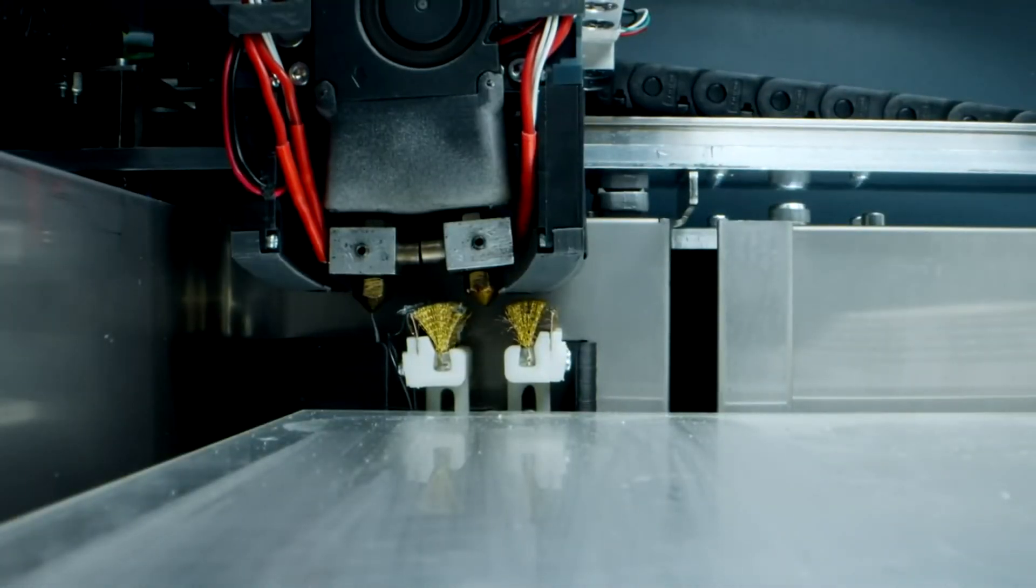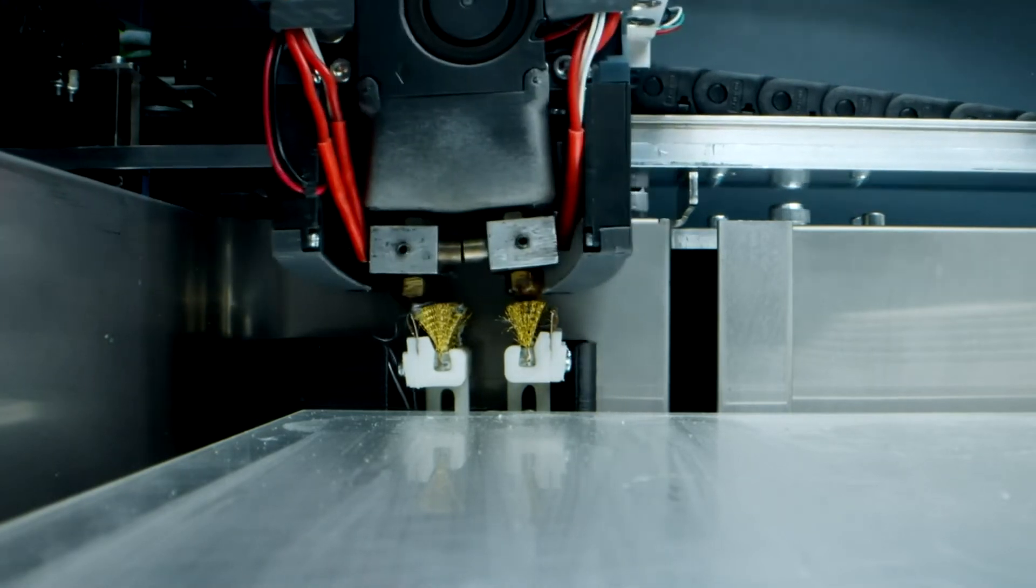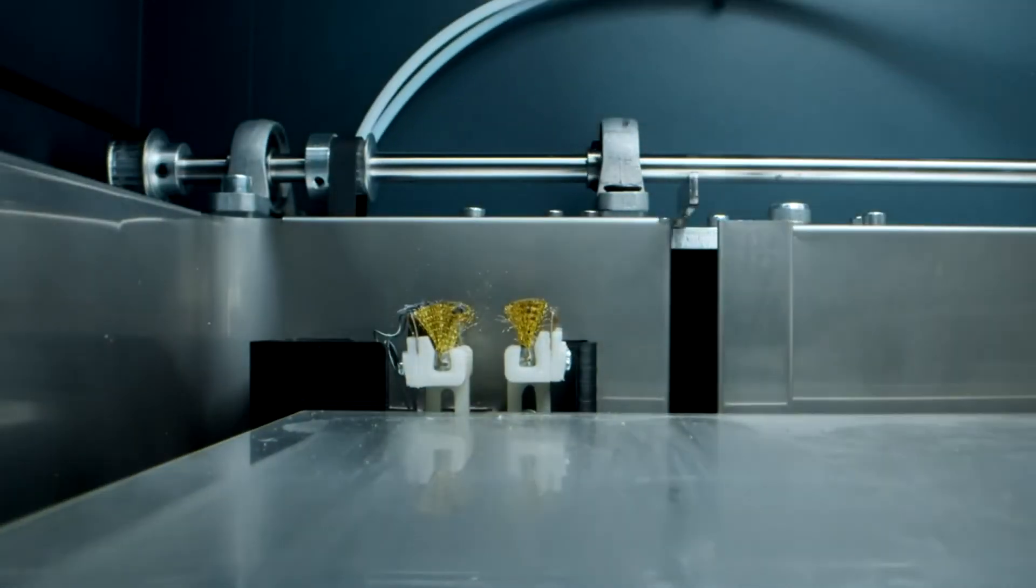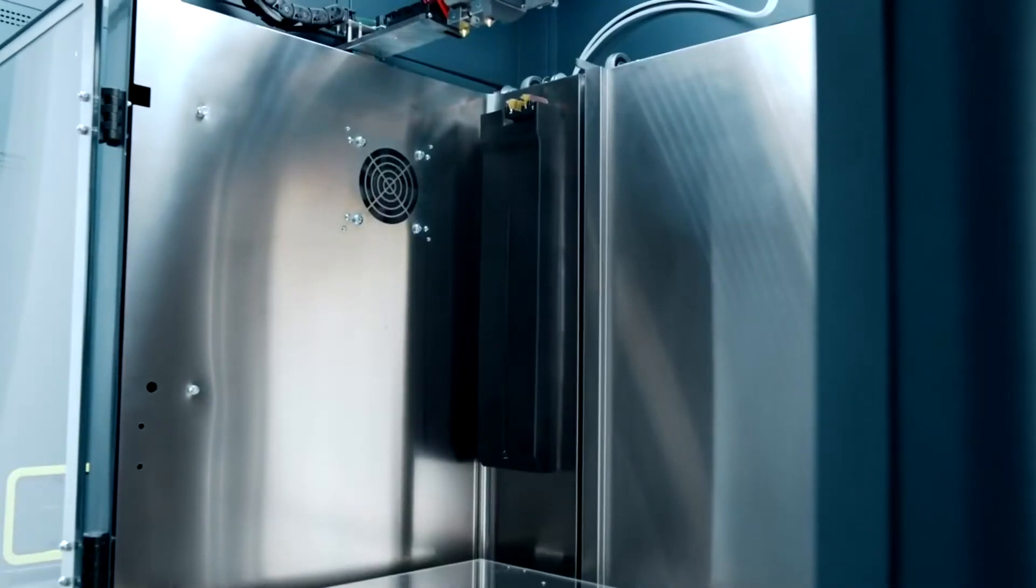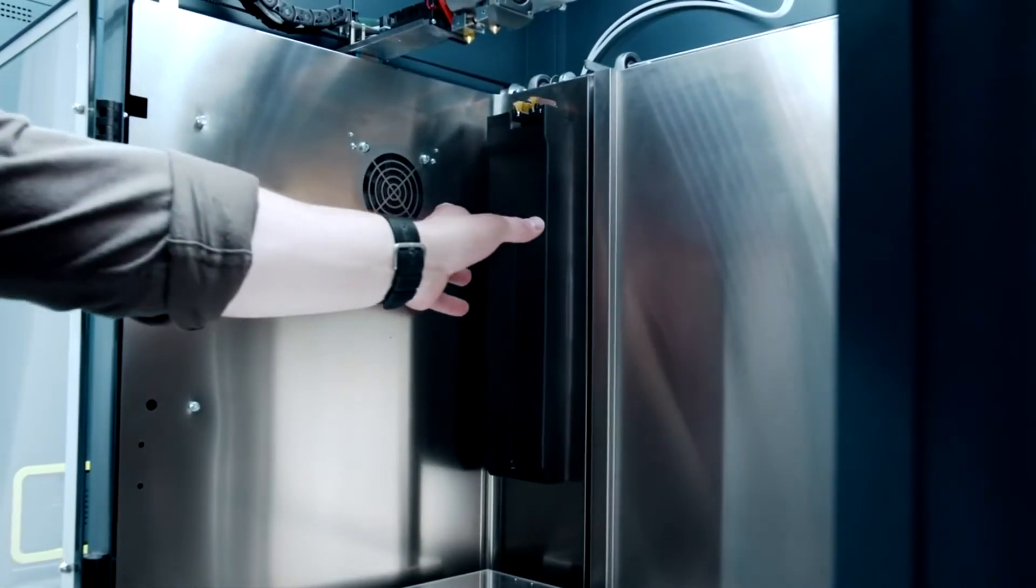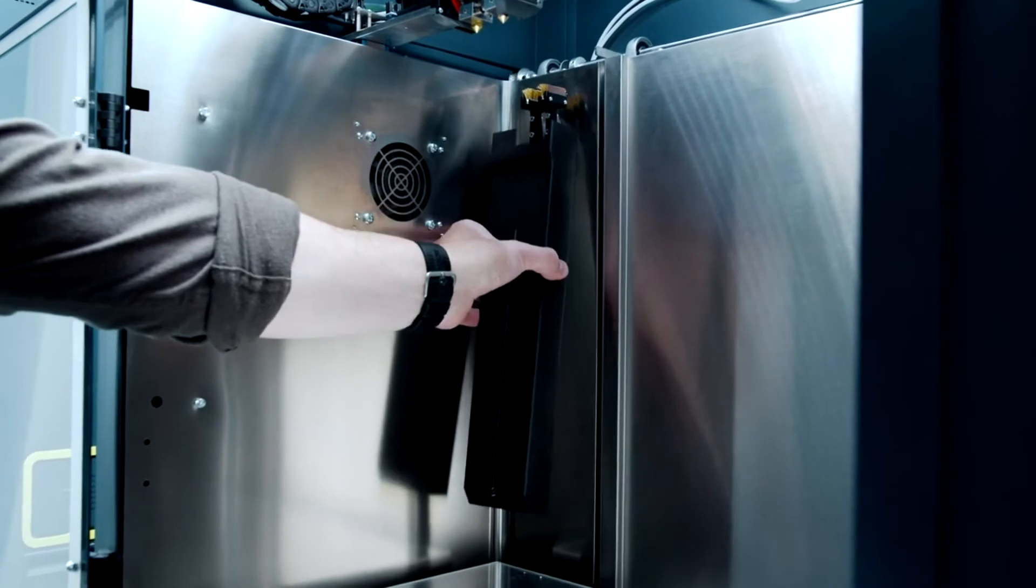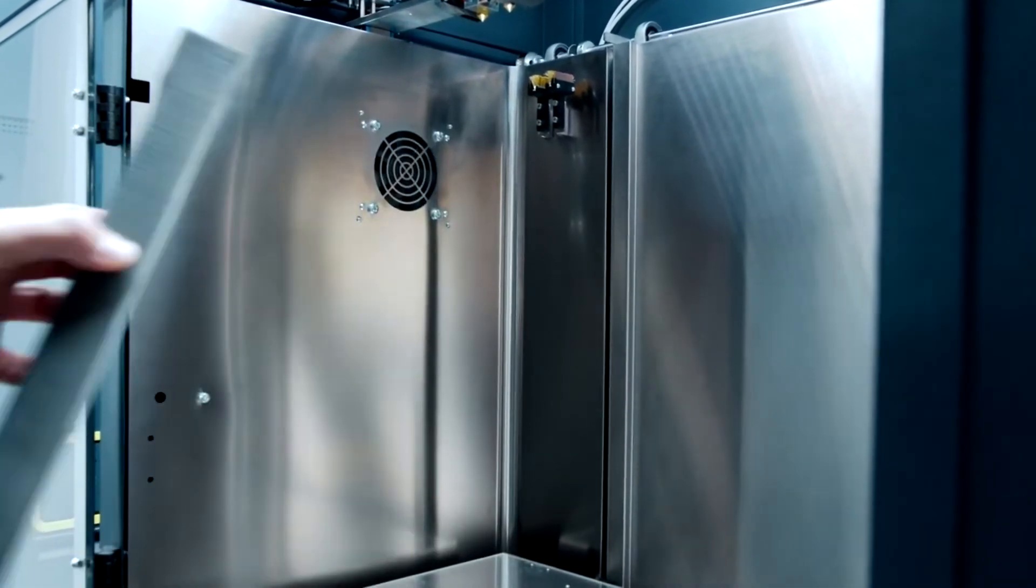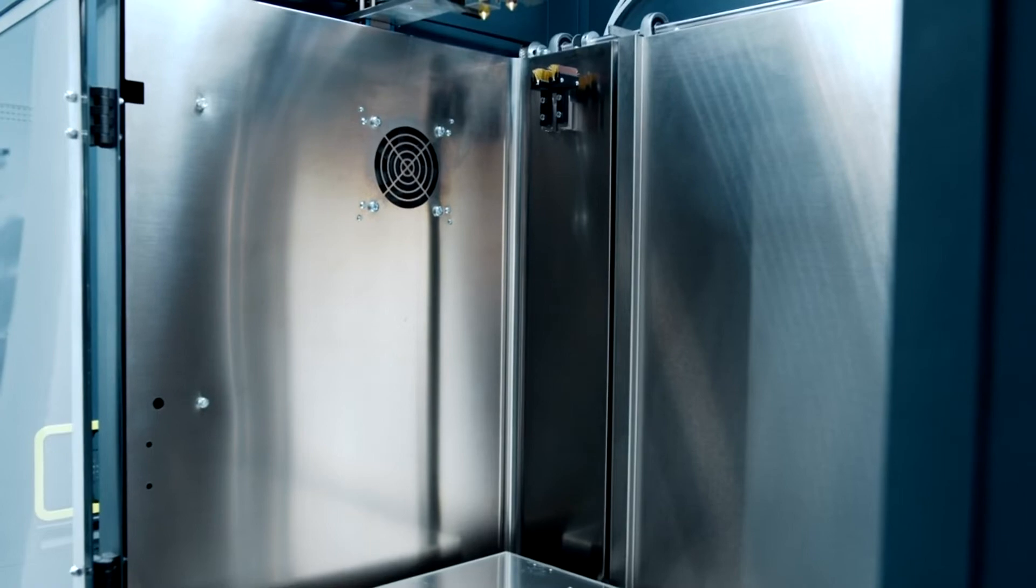With each extruder pass, the machine uses exchangeable Teflon scrapers and brass brushes built into the machine to clean the nozzles of any additional filament for the best results, especially for two material projects. The bin with the scraped waste can be easily emptied.